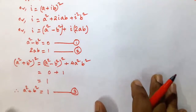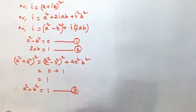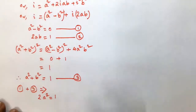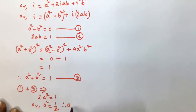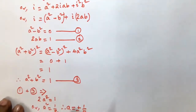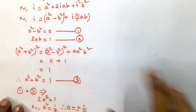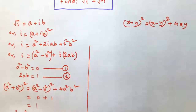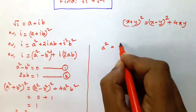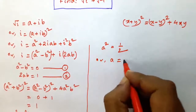Now friends, add equations 1 and 3. We have 2a squared is equal to 1, or a squared is equal to half. Therefore, a is equal to plus or minus 1 by root 2. Putting the value of a in equation number 1, we find a squared equals half, so b is also equal to plus or minus 1 by root 2.